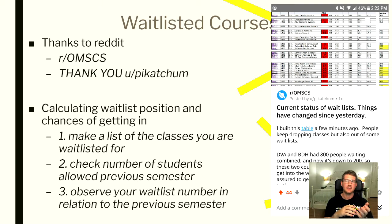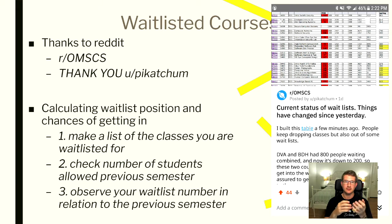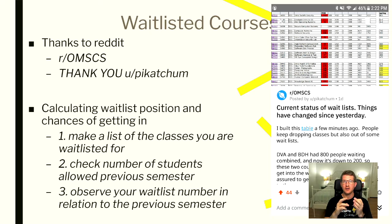As I said at the beginning of this video, this video is entirely inspired by a Reddit post that you guys can see on the right. Thank you Reddit OMSCS and thank you to Pikachu, who is the person who posted it. This Reddit post is about how to tell whether you are going to be able to get into a waitlisted course or not, based on your position. It's a really smart idea, and I'm grateful to both the thread and the poster. Essentially, it's a three-step process: first, you make a list of the classes you're interested in and waitlisted for; then, you check the number of students who were allowed into the class the previous semester; and third, you observe the difference between your waitlist number and the number allowed in previously. Based on that, you should be able to figure out whether you're likely to get into the course.